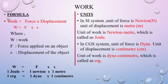Let us see the units now. In the SI system, the unit of force is Newton and the unit of displacement is meter. Thus, the unit of work is Newton-meter, which is also called Joule. In the CGS system, the unit of force is Newton and that of displacement is centimeter. Thus, the unit of work done is Newton-centimeter, which is also called Erg.